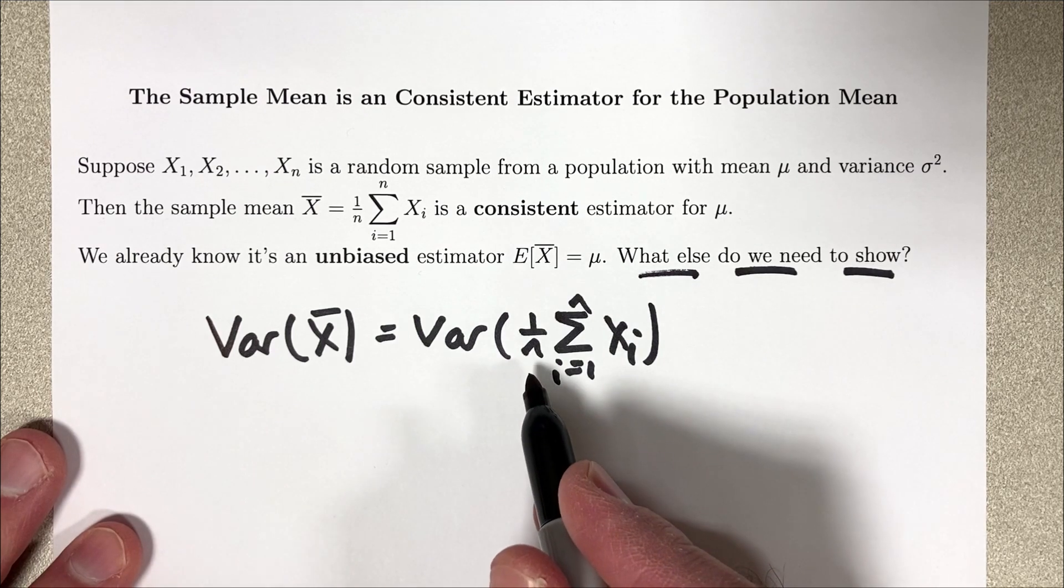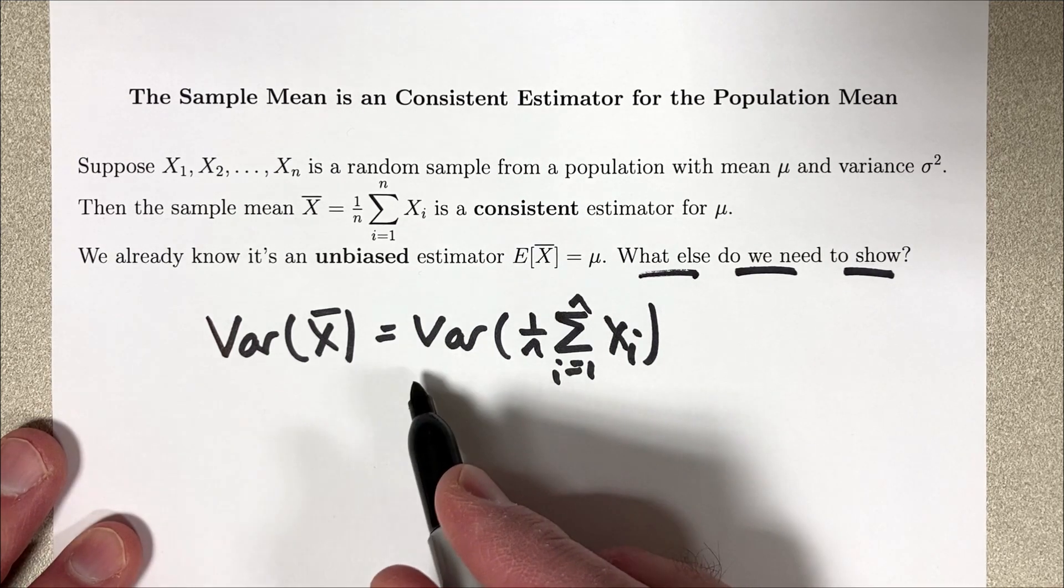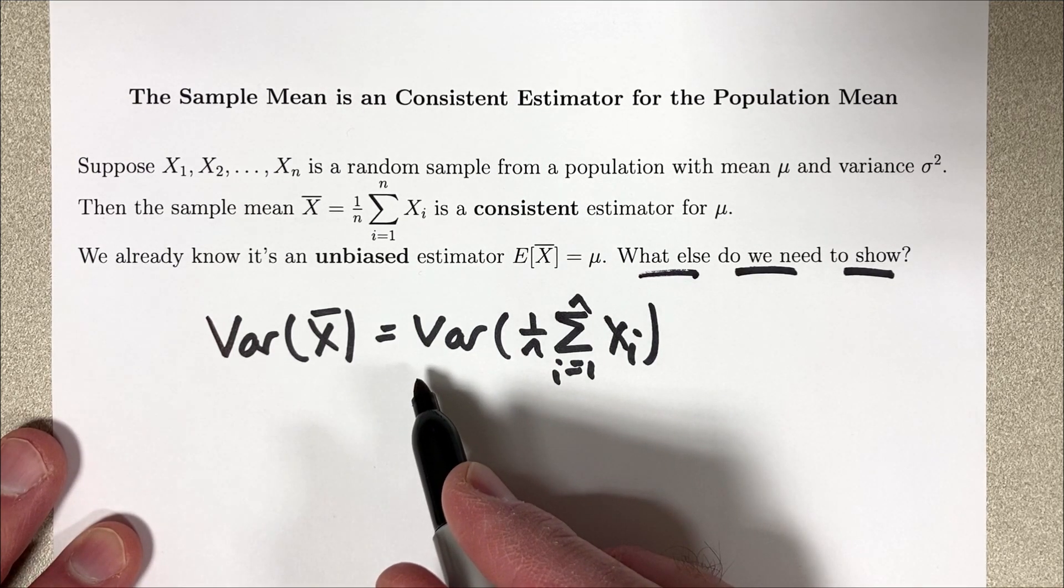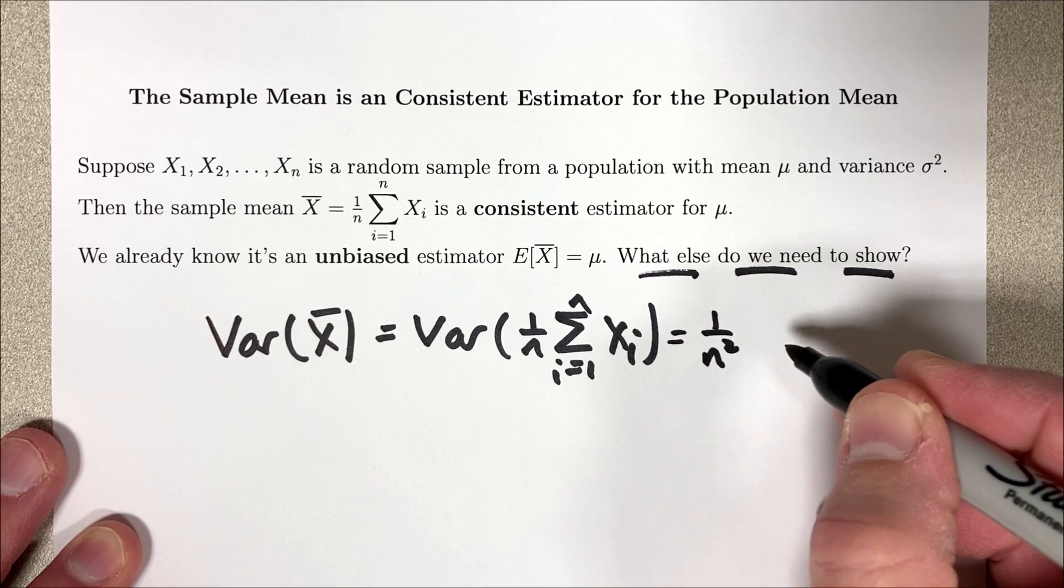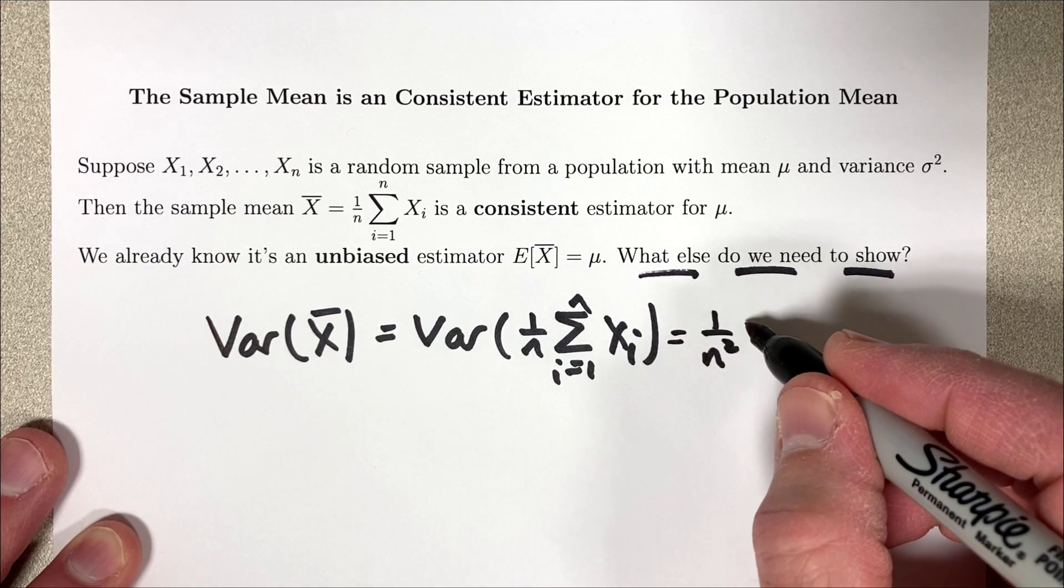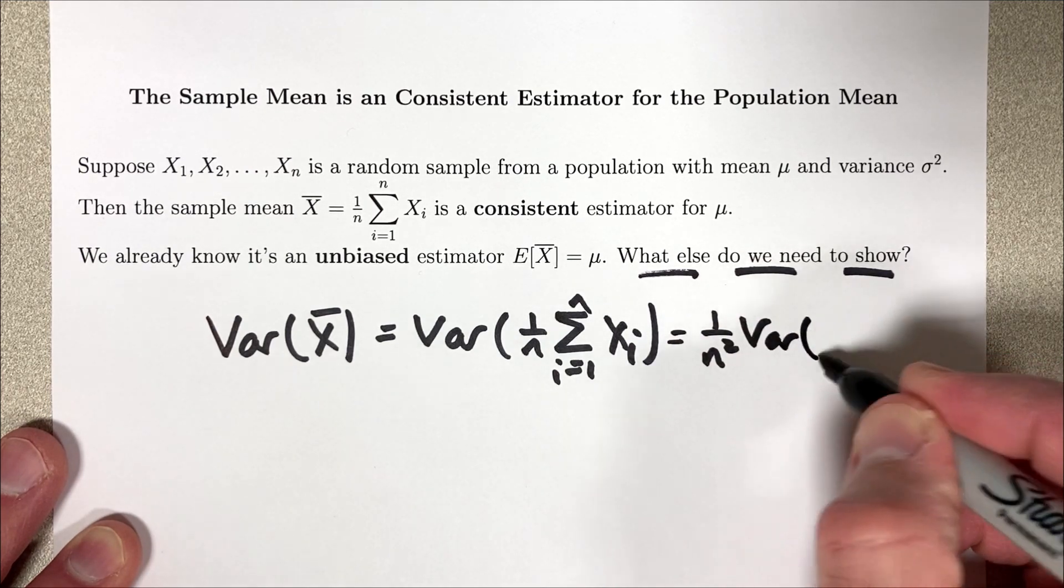One nice property is that this coefficient, this constant, can be brought out in front as long as you square it. 1 over n quantity squared is the same as 1 over n squared. So I can bring it out as 1 over n squared times the variance of the summation.